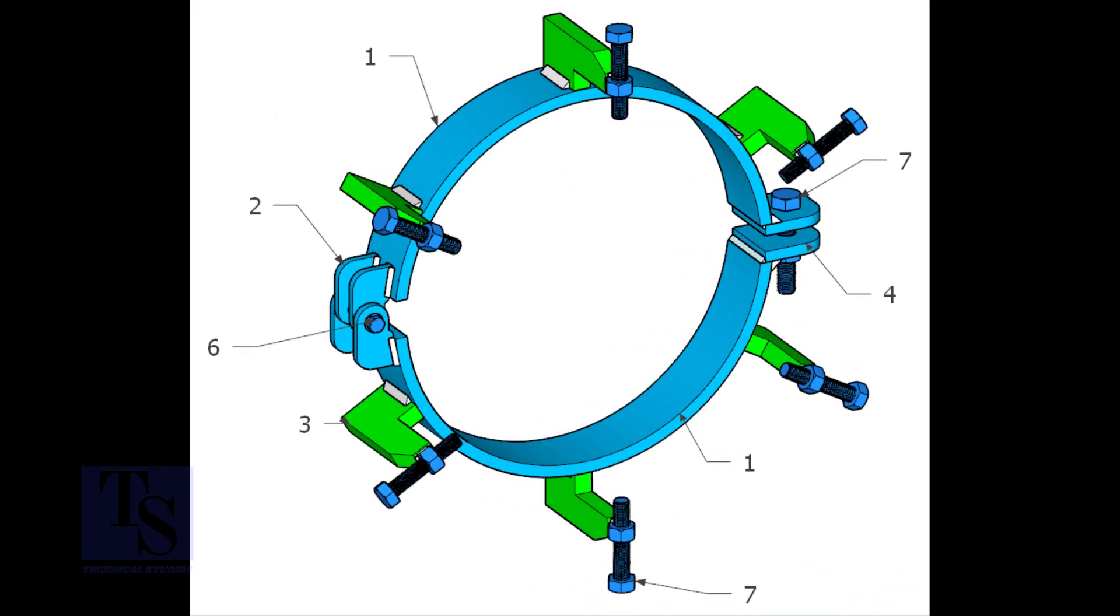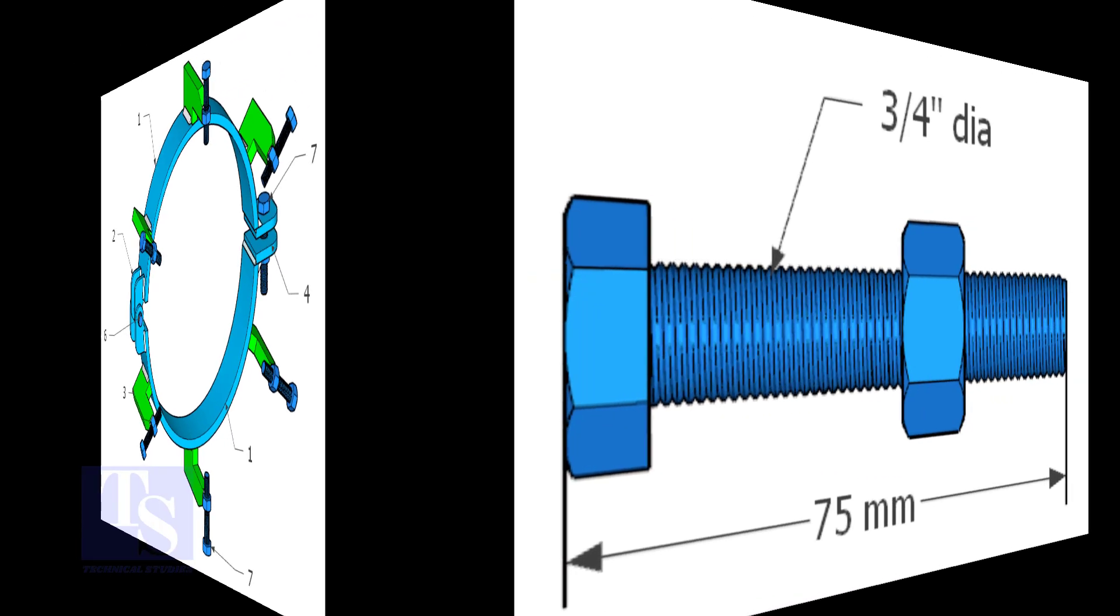Item number 7 is nut and bolt, three quarters diameter and 3 inches long. The quantity is 7 numbers.